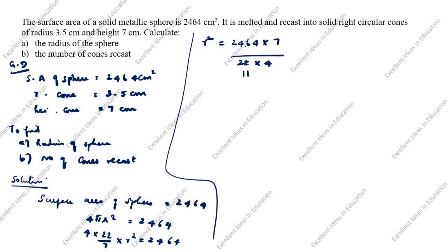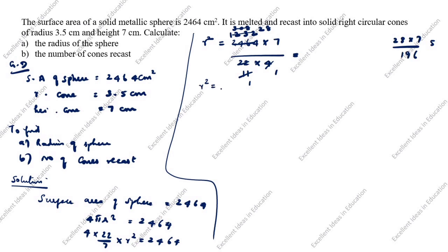Simplifying the calculation: cancelling common factors between 2464, 7, 22, and 4. After cancellation and simplification, we get r² = 196.